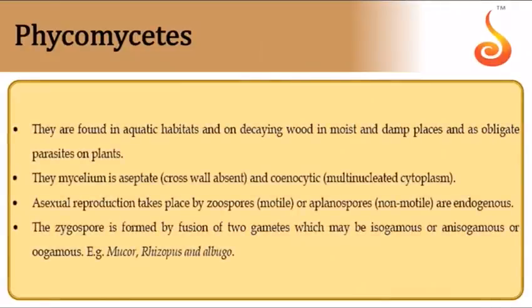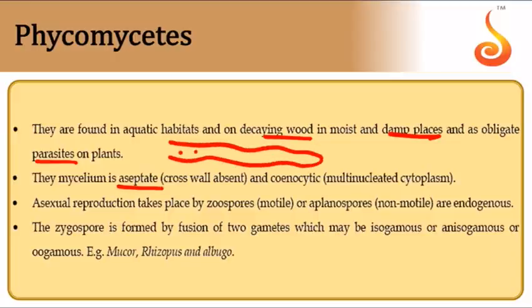Phycomycetes is the first class of fungi. They live on decaying wood in moist and damp places; some are aquatic and obligate parasites. Their mycelium is aseptate (coenocytic) — the hypha is a tube with many nuclei and no cross walls. Asexual reproduction may occur through flagellated zoospores or non-motile aplanospores.